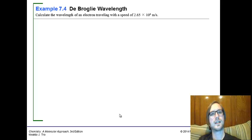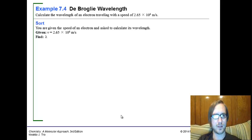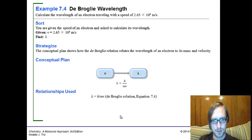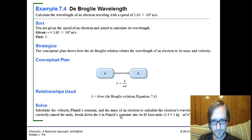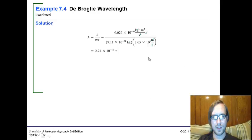All right. Looking forward to the de Broglie wavelengths. Calculate the wavelength of an electron traveling at the speed of 2.65 times 10 to the sixth meters per second. We know the speed of the electron, finding wavelength. The wavelength is inversely proportional to momentum—mass and velocity. We're using the de Broglie relation. We're going to follow this plan. One thing important to realize is the mass of an electron is a constant you'll have to look up.